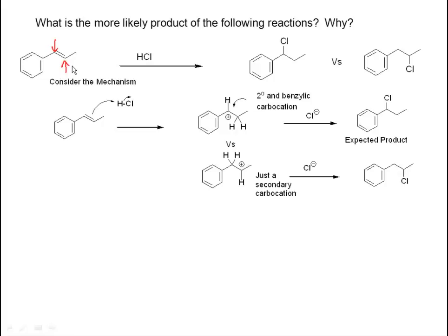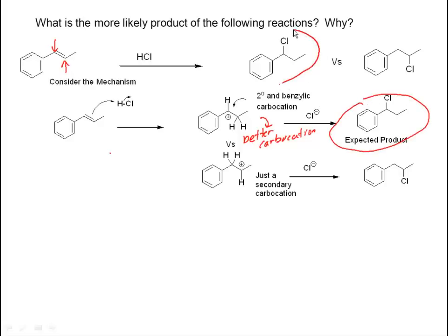We protonate the double bond. We get either the carbocation on top, which is secondary and benzylic, or the carbocation on the bottom, which is just merely secondary. The secondary benzylic carbocation is better, so we should be making the compound where chlorine attacks that more stable carbocation. Recall from Chapter 6 — you make the best carbocation and capture it with a nucleophile, often a halide.